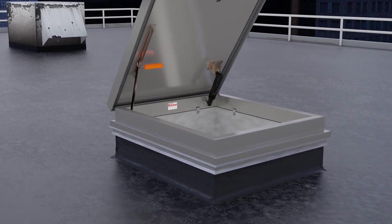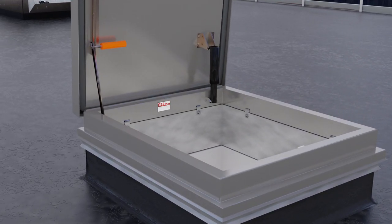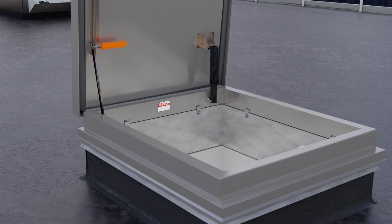If the roof is in good shape, Bilko's Versamount Roof Hatch simplifies replacement and eliminates the need to touch the roofing membrane.